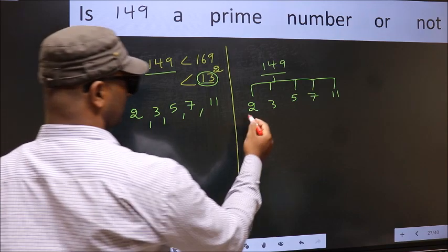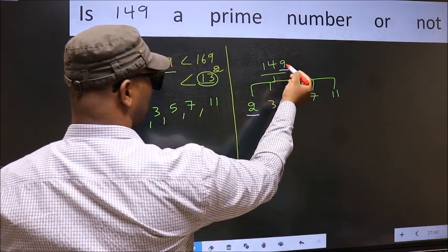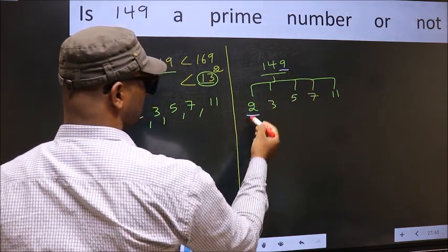Starting with 2: last digit 9 is not even, so this is not divisible by 2.